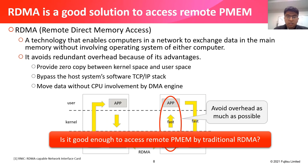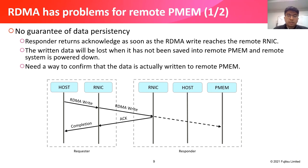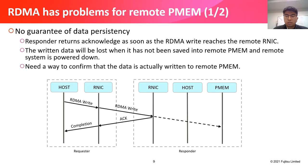Is it good enough to access remote P-memory by traditional RDMA? Not really. RDMA has two problems for accessing remote P-memory. The first problem is no guarantee of data persistency. The responder returns an acknowledgment as soon as the RDMA write reaches the remote RNIC. The returned data will be lost if it has not been saved into remote P-memory and the remote system is powered down. For data persistency, we need a way to confirm that data is actually written to remote P-memory.